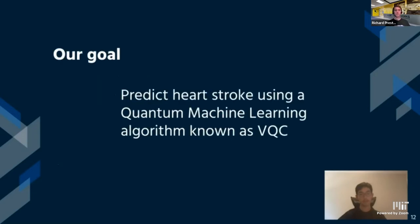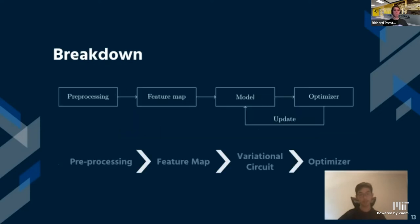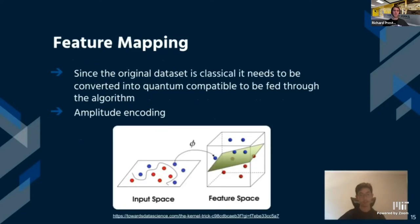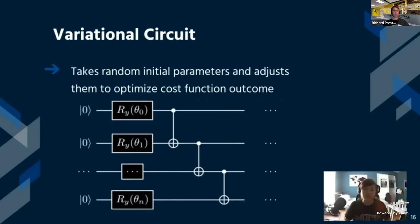Our goal with this algorithm is to predict whether a person is at high risk for heart disease from a set of data features. There are four stages of implementation. The first stage is preprocessing: the original data starts as unorganized classical data, and we analyze the parameters to figure out which ones are important to feed into the algorithm. We found the four most important features, isolated them, and normalized them to change the range of values. The second stage is the feature map, which converts the modified classical data into quantum data that can be run on a quantum computer. The goal is to find the correct slope of the plane that classifies the data, separating the red from the blue.